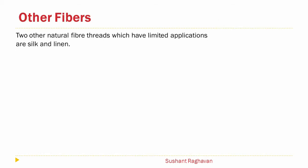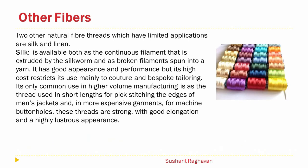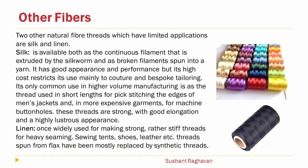Other fibers. Two other natural fiber threads with limited applications are silk and linen. Silk is available both as a continuous filament extruded by the silkworm and as broken filaments spun into a yarn. It has good appearance and performance, but its high cost restricts its use mainly to couture and bespoke tailoring. Its only common use in higher-volume manufacturing is as the thread used in short lengths for baste stitching the edges of men's jackets and in more expensive garments for machine buttonholes. Linen, once widely used for making strong, rather stiff threads for heavy seaming, sewing tents, shoes, and leather, has been mostly replaced by synthetic threads.